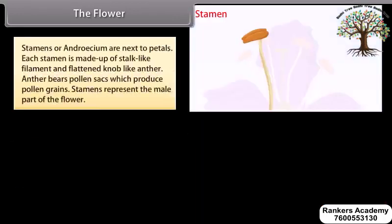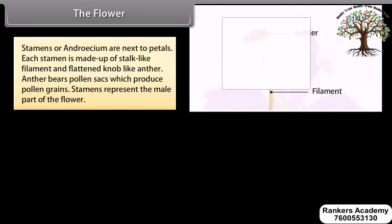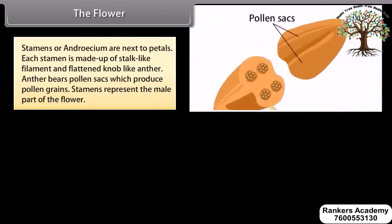Stamens, or androecium, are next to the petals. Each stamen is made up of a stalk-like filament and a flattened knob-like anther. The anther bears pollen sacs which produce pollen grains. Stamens represent the male part of the flower.